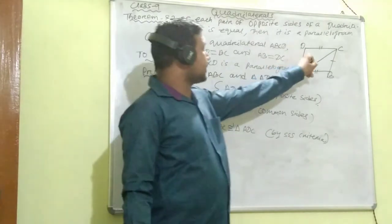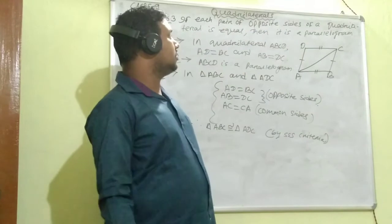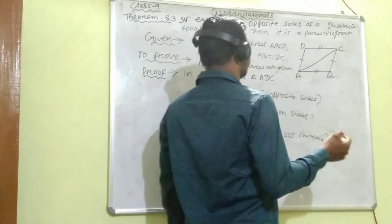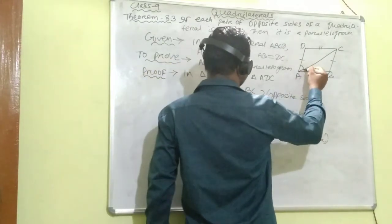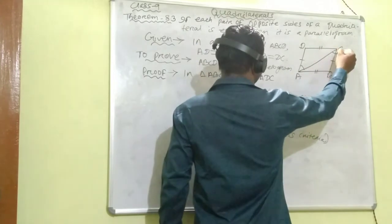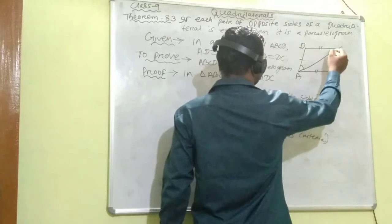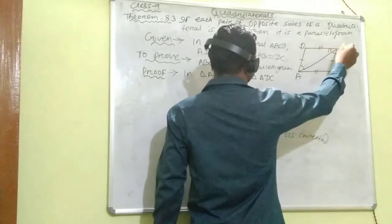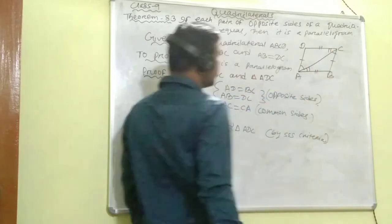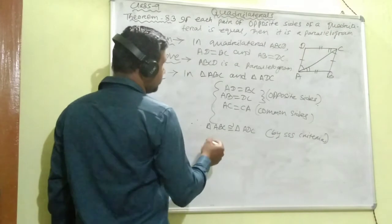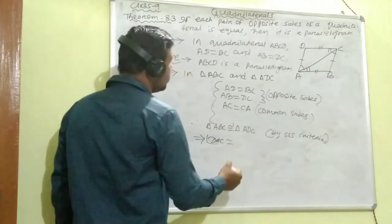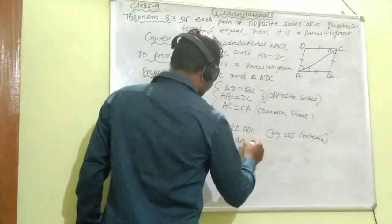So we can say angle DAC equals angle BCA, and also angle DCA equals angle BAC. This implies angle DAC equals angle BCA.